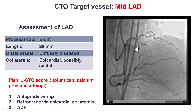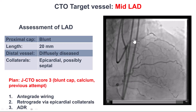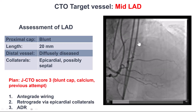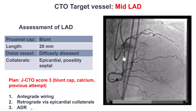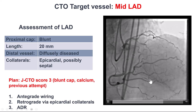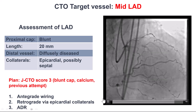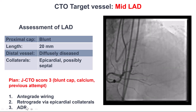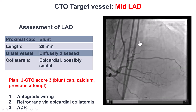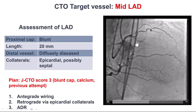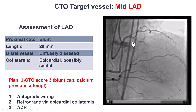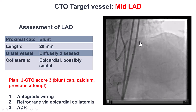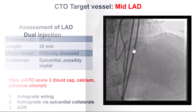Based on this, the initial thought was to try antegrade wiring if we could understand the location of the proximal cap. If that didn't work, retrograde through epicardial or septals, and if that failed, do ADR to minimize the risk of losing the side branches, as we have a fairly large diagonal at the proximal cap.